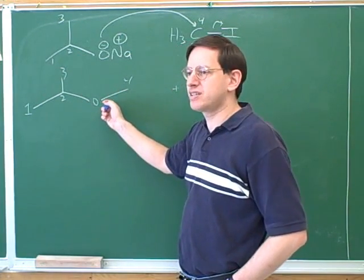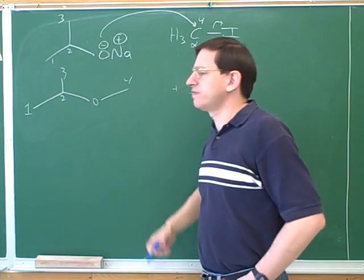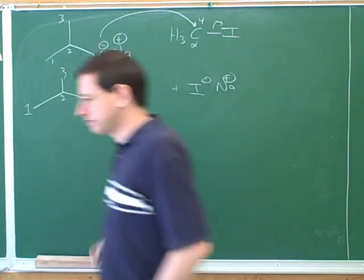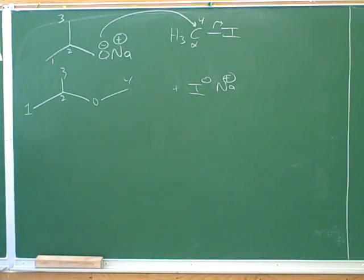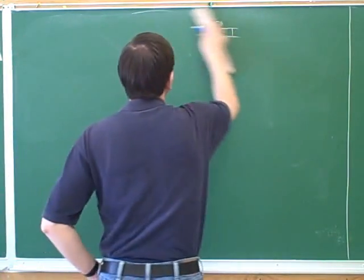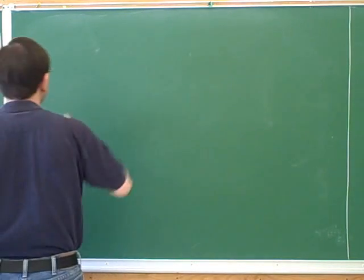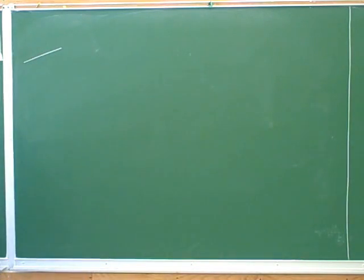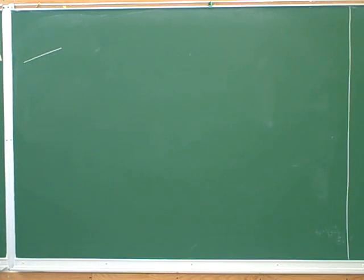What type of functional group is this? Ether. This is another one of those Williamson ether syntheses, where we took an alkoxide and a haloalkane to make an ether. So we're not going to get ethers from elimination reactions — that's true because an elimination reaction makes a pi bond, and pi bonds don't have anything in particular to do with ethers. The way to make ethers is with these SN2 reactions. That's one good way.